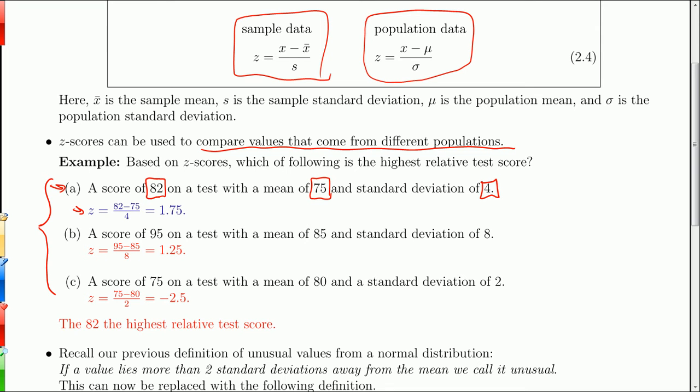For the your turn version, we have a score of 95 - that's x - on a test with a class mean of 85, that's mu. The standard deviation of eight equals sigma. When you plug those into the formula here, you get 1.25. So far we have a 1.75, a 1.25.